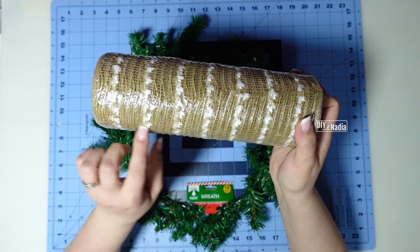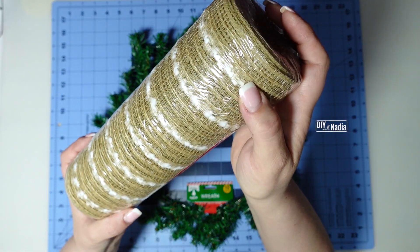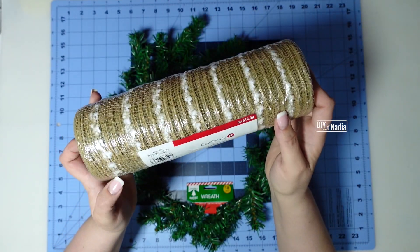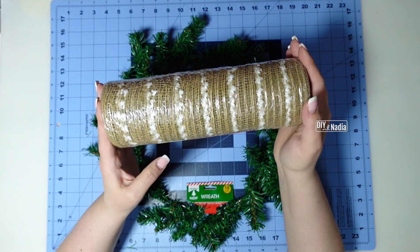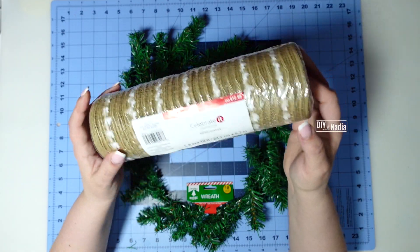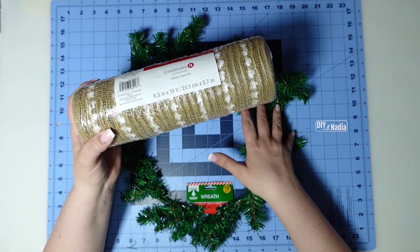For deco mesh I'm going to be using this beautiful burlap deco mesh. It does have little white in it but it's so pretty. I got this at Jordan Fabrics. Any burlap deco mesh you have on hand will do if you're going to do something really similar to this.